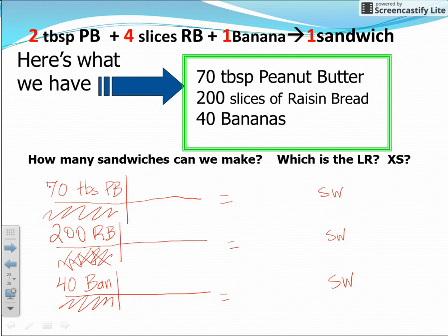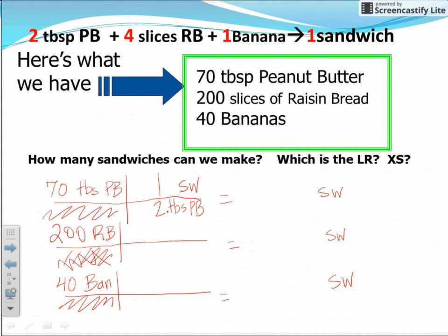This is like a mole-to-mole calculation. We put tablespoons of peanut butter on the bottom and sandwiches on top. For one sandwich we need two tablespoons of peanut butter, so: 70 tablespoons × (1 sandwich / 2 tablespoons) = 35 sandwiches. The peanut butter will run out after making 35 sandwiches.